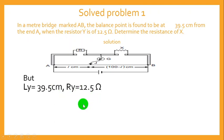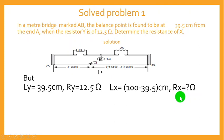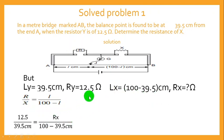Since the total length is 100 centimeters, LX equals 100 minus 39.5, which is 60.5. RX is unknown. Using the formula RY over RX equals L over (100 minus L), we substitute: 12.5 over RX equals 39.5 over 60.5. Cross-multiplying and making RX the subject gives RX equals 12.5 times 60.5 divided by 39.5.